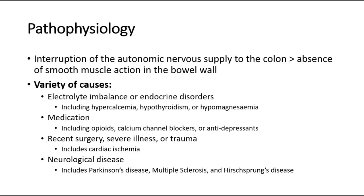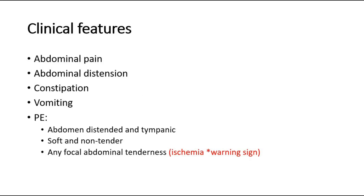Most patients will present with the clinical features of mechanical bowel obstruction: abdominal pain, abdominal distension, constipation, and vomiting. However, vomiting is typically a late feature due to the colon being most distal in the GI tract. On examination, the abdomen will be distended and tympanic, whilst often soft and non-tender.